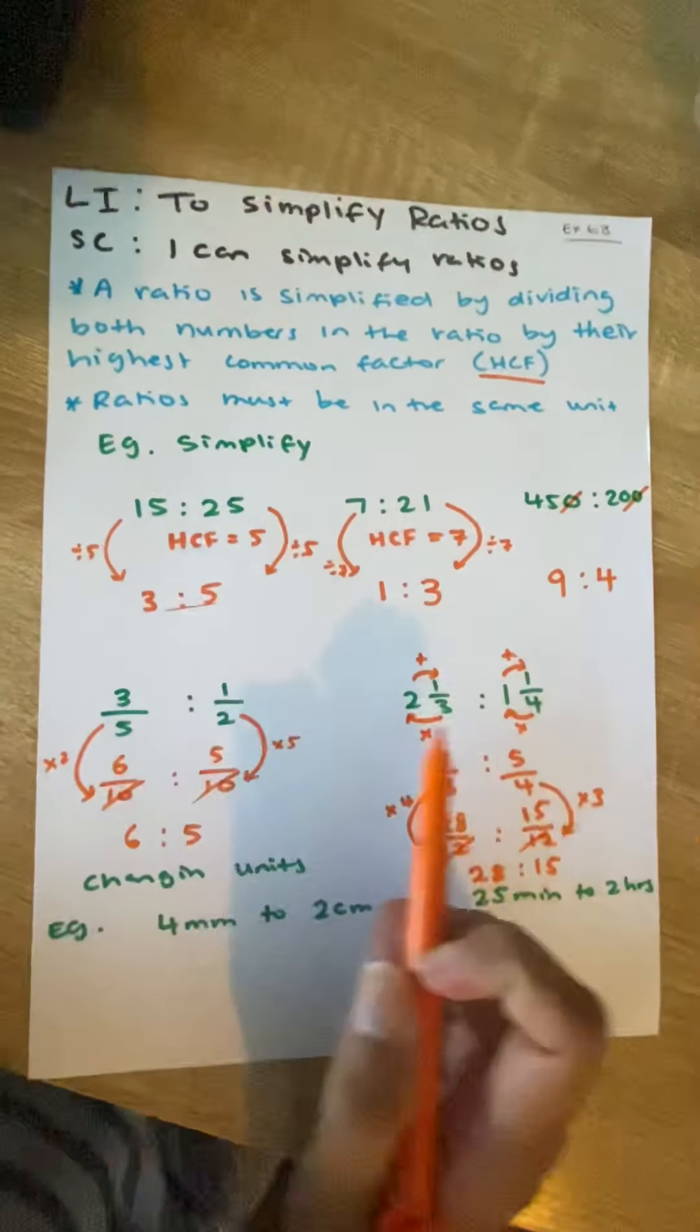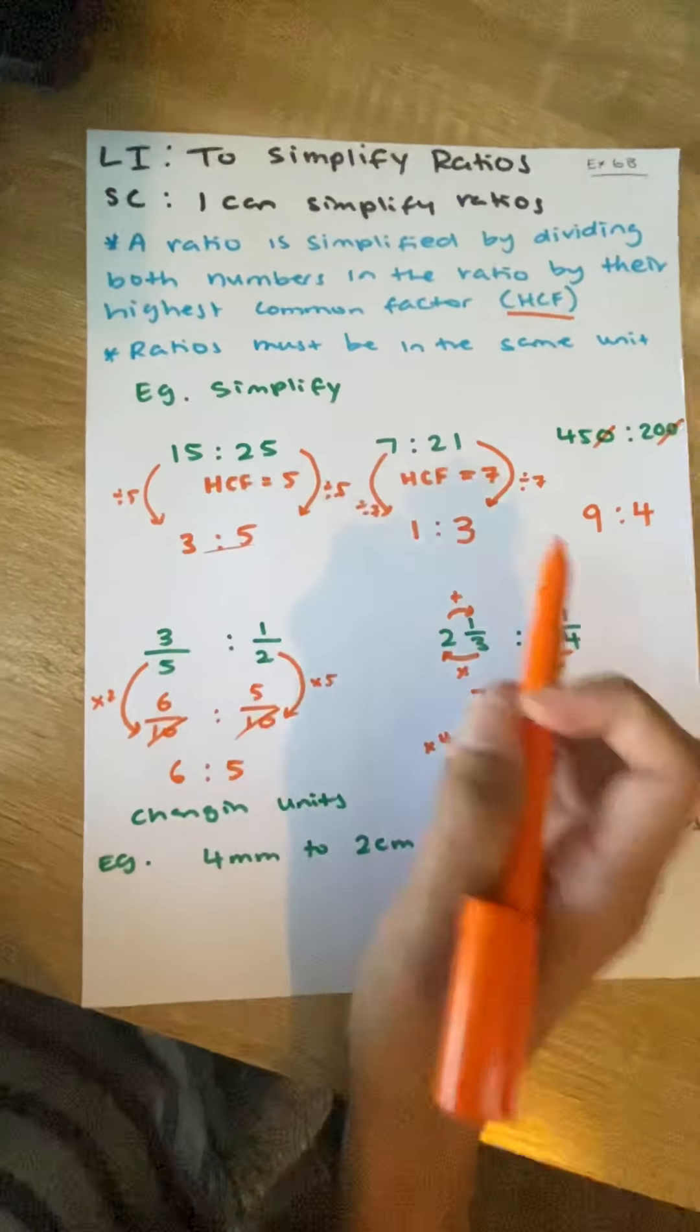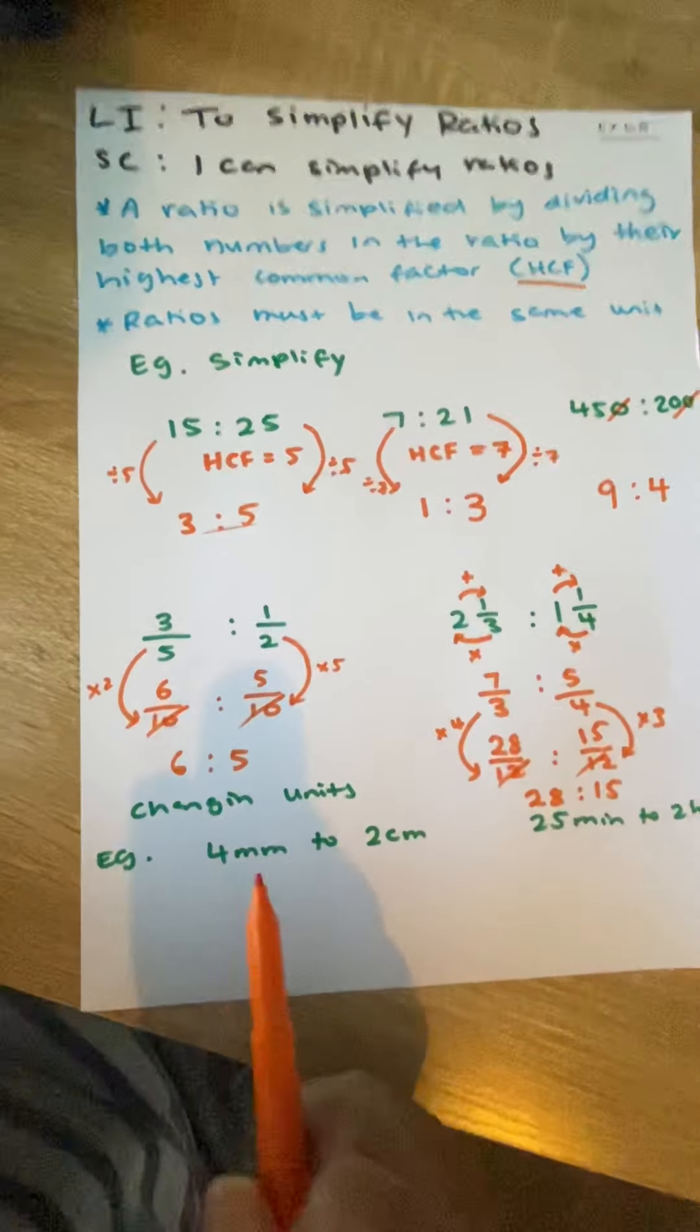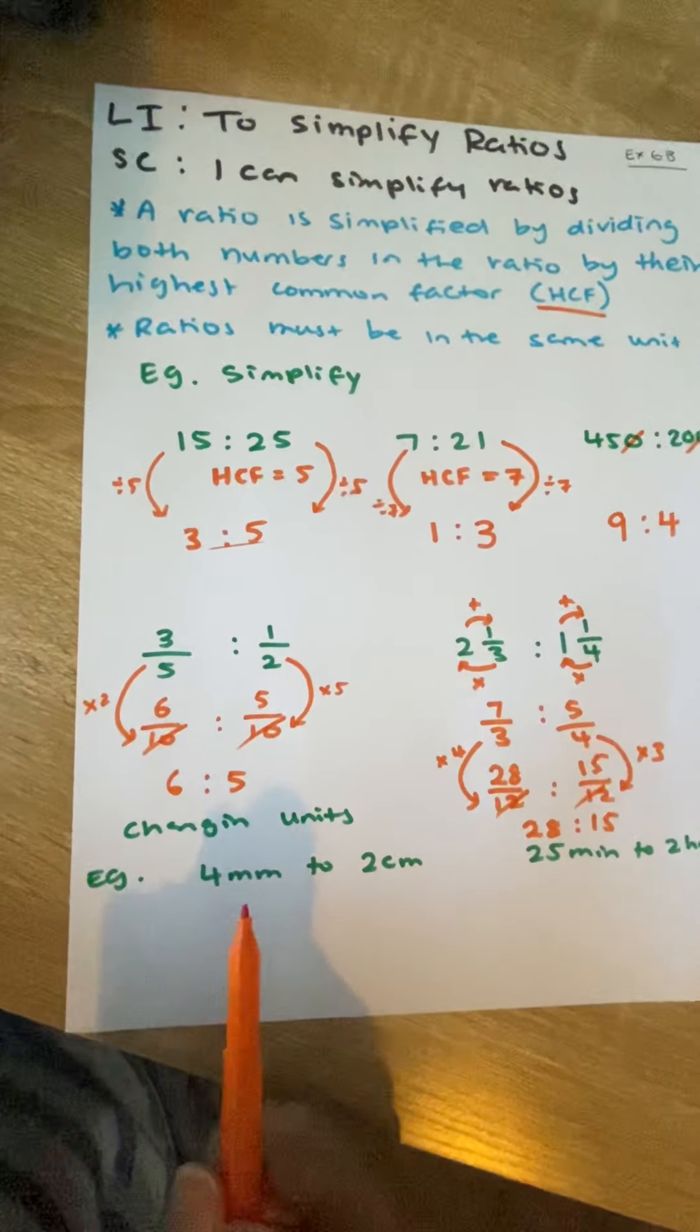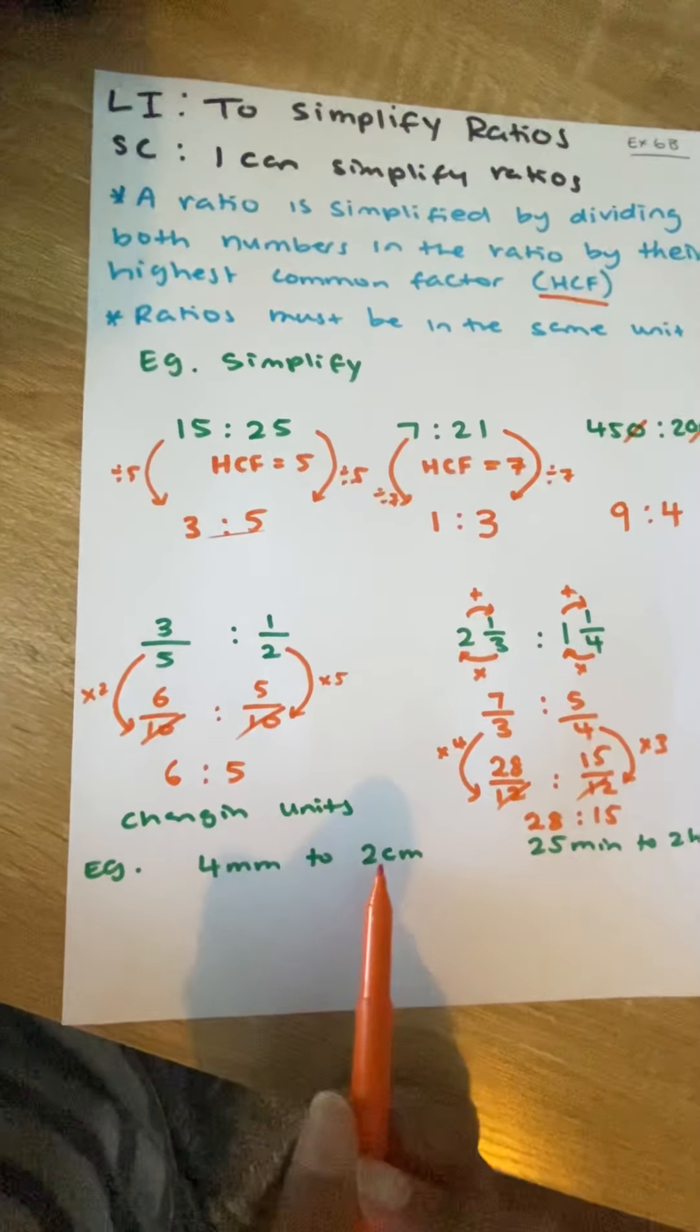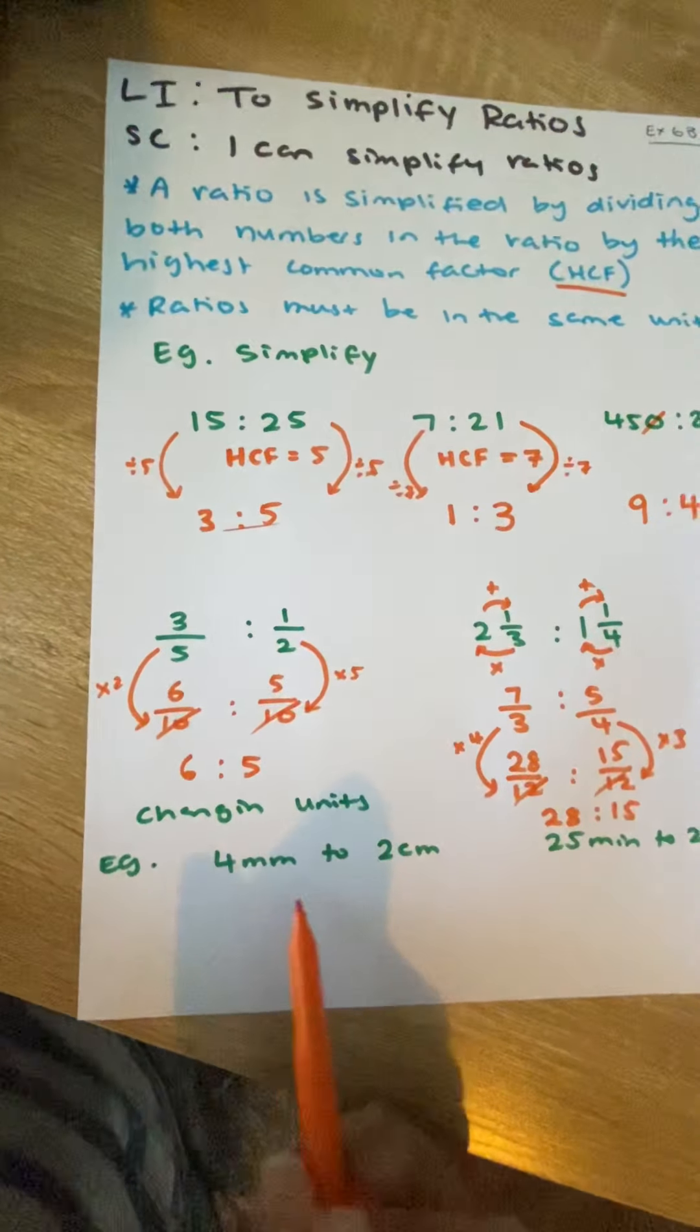So, simplifying ratios is a lot to do with our fractions, a lot to do with finding our highest common factor as well. Now, changing units. When we're comparing ratios, remember I said you can't have the units to be different. When we're comparing ratios, we want the units to be the same.